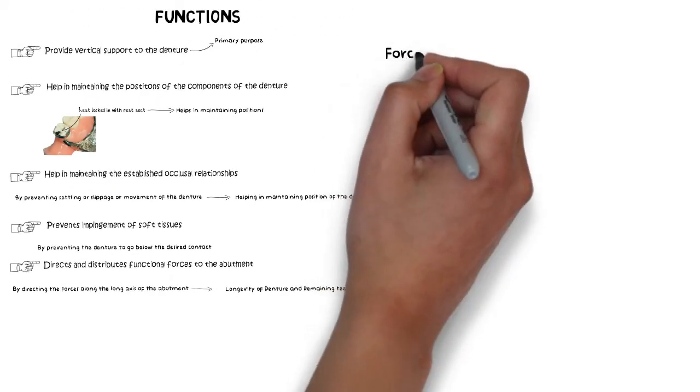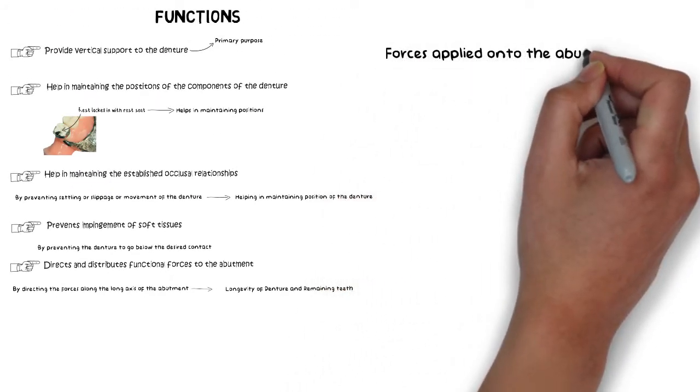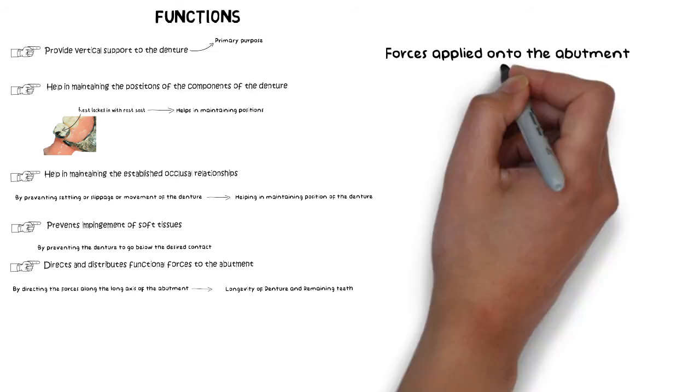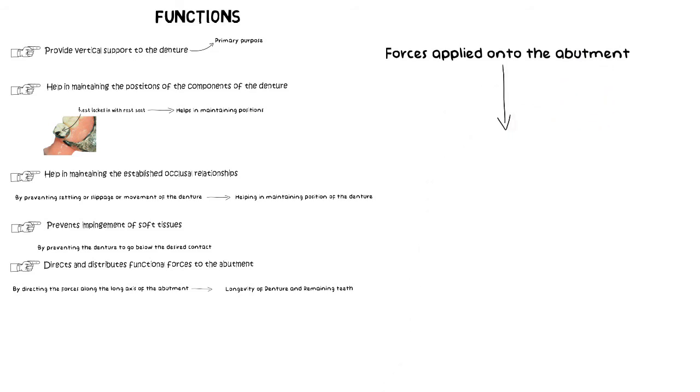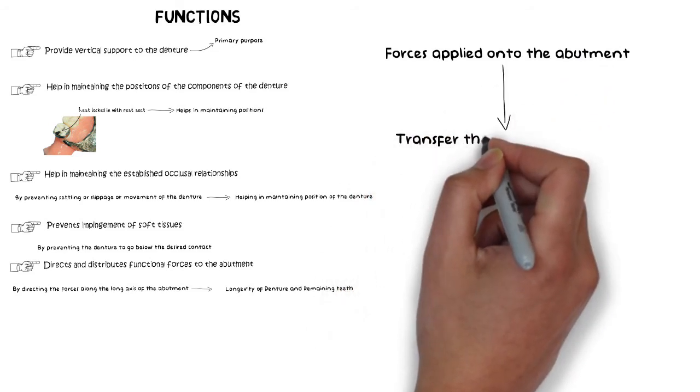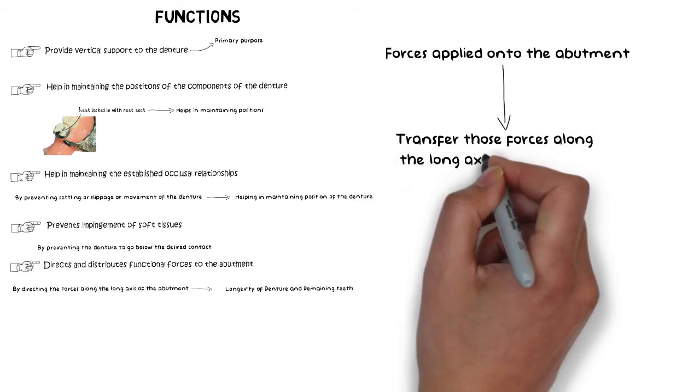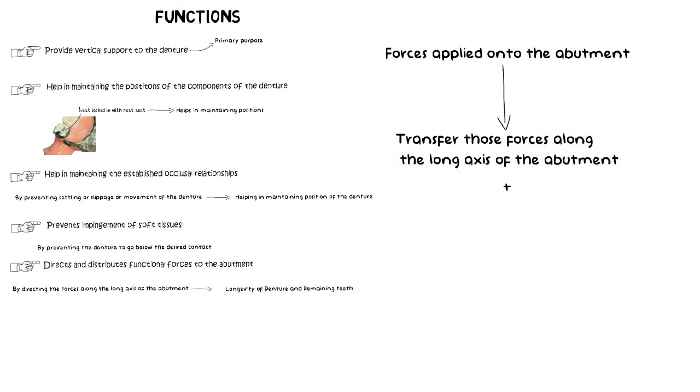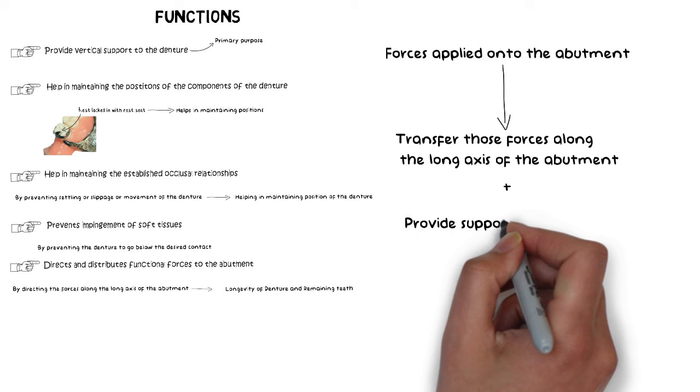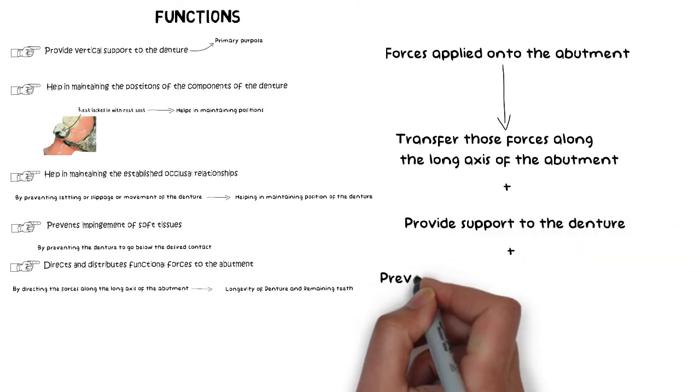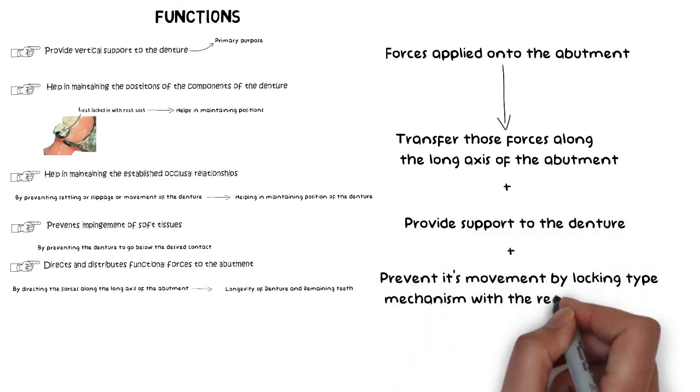So in conclusion, the rest basically serve to direct the forces being applied onto the abutment and transfers those forces to the long axis of the tooth where the tooth can easily withstand those applied stresses. Rest also provide support to the denture and prevent their movement towards the tissue by locking type of mechanism with the rest seat.